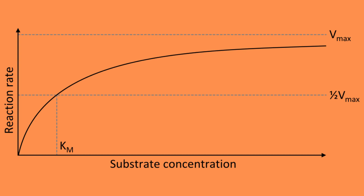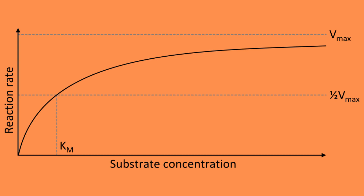Let us look at how we can express competitive inhibition using a Michaelis-Menten plot, where the y-axis is the rate of the reaction and the x-axis is the substrate concentration. So if this is a normal reaction between an enzyme and a substrate, we see that the rate of reaction increases if we increase the concentration of substrate. However, if we add a competitive inhibitor, the Michaelis-Menten plot starts looking like this.